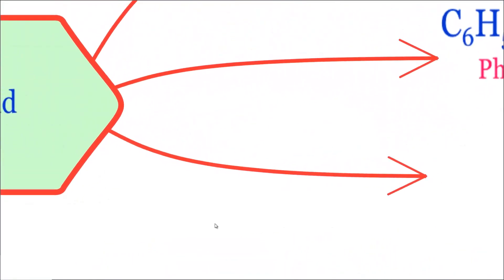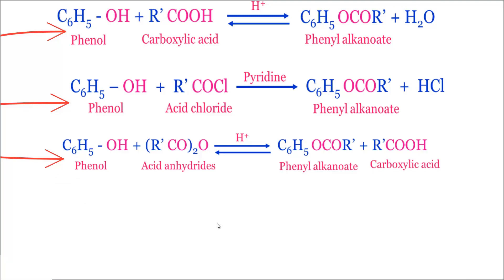By the third method, phenol C6H5OH is treated with acid anhydride. The general formula of acid anhydride is (RCO)2O. In the presence of acid medium (H+ on the arrow), it results in the formation of an ester — phenyl alkanoate, C6H5OCOR — along with a carboxylic acid R-COOH. These are the three different methods by which we can obtain an ester from phenol.